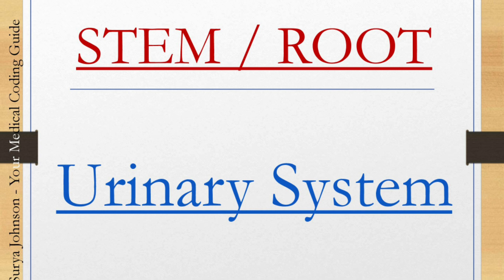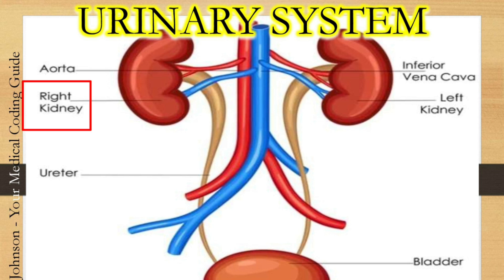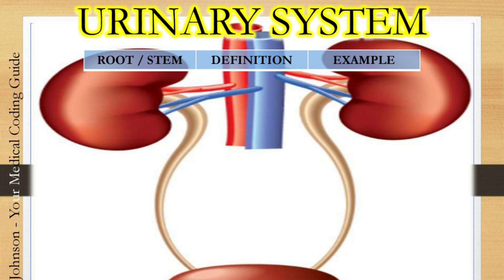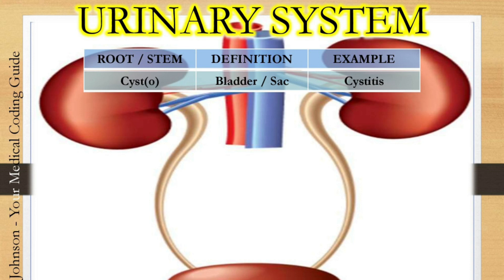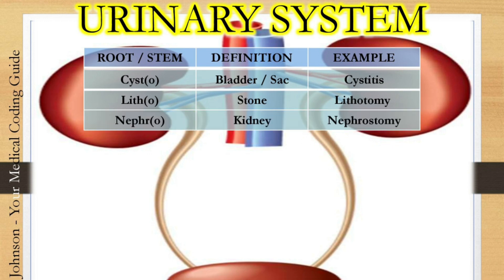Next, we will move on to the stem or root word pertaining to the urinary system. The urinary system works as a filter, removing toxins and waste from the body through the urine. Your urinary system is composed of the right kidney and left kidney, ureter, bladder, and urethra. The first root word is cysto — cysto means bladder or sac. Example: cystitis, which means inflammation of your urinary bladder. Next is litho — litho means stone. Example: lithotomy, which means surgical removal of the stone or calculus. The next one is nephro — nephro means kidney. Example: nephrostomy, which means an artificial opening from the outside of the body to your kidney.